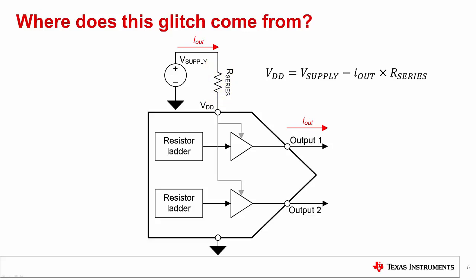If the load on one of the outputs changes, like when the DAC code changes, a current Iout will need to be sourced by the supply as well. If the previous voltage on VDD was equal to Vsupply, it is now equal to Vsupply minus Iout times Rseries. This means that a change on output 1 has caused the supply for the buffer for output 2 to change as well.